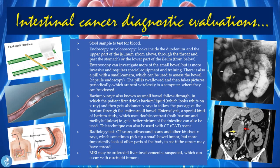How can we diagnose small bowel cancer? A stool sample can be tested for blood using a fecal occult blood test. Endoscopy and colonoscopy can look inside the duodenum and upper jejunum from above (through the throat past the stomach) or the lower ileum from below. Enteroscopy can investigate more of the small bowel but is more invasive and requires special equipment. Capsule endoscopy involves swallowing a pill with a small camera that takes pictures periodically, sending them wirelessly to a computer.